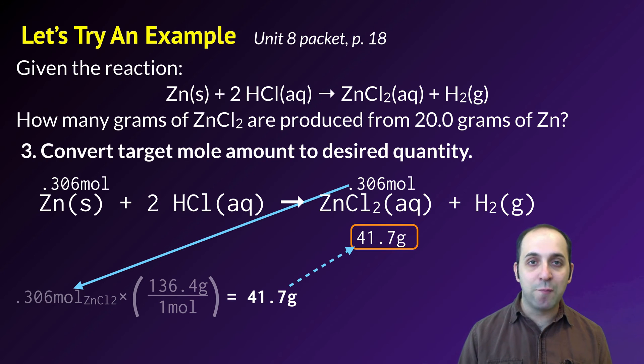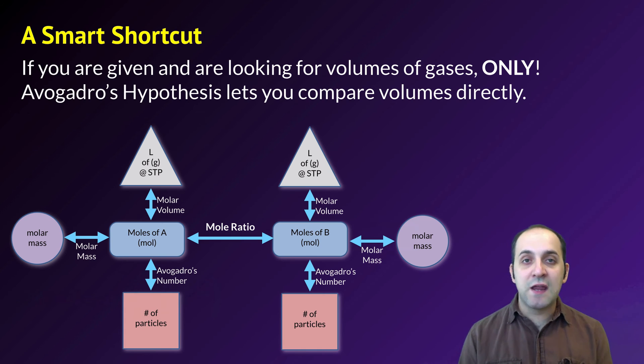So generally speaking, I can give you quantities in any of the three molar amounts and expect you to determine quantities of any of the three molar amounts of whatever the target substance is that we're looking for. But there is a smart shortcut that you can do. But this only works if you're given and are looking for volumes of gases.